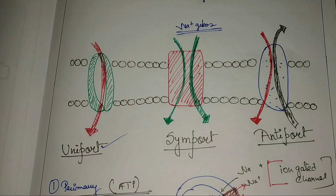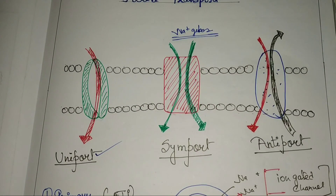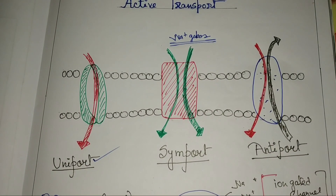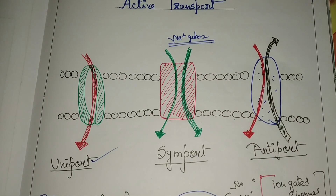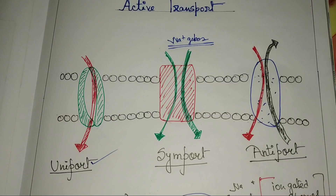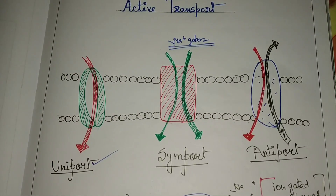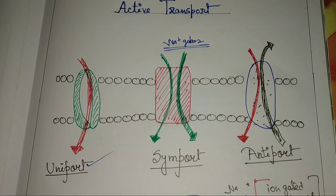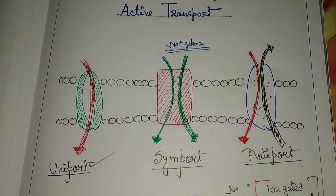From this lecture, you can see what is active transport. Active transport is divided into two parts: one is primary active transport and another one is secondary active transport. You also learned that there are three modes of transportation in active transport. In my next video, I will briefly describe passive transport. Please like, comment, share, and subscribe to my channel. See you again.